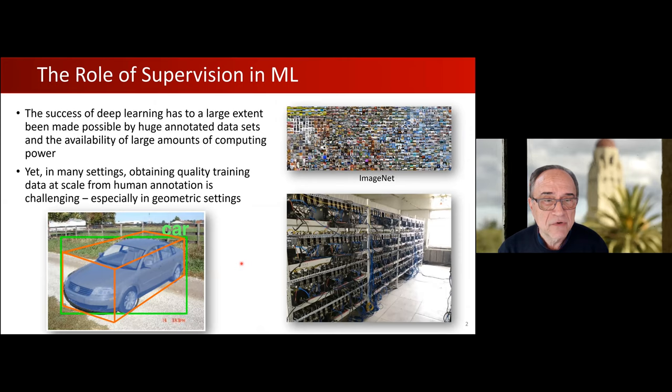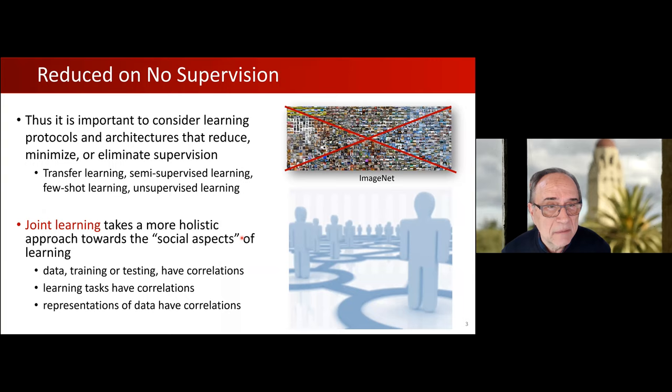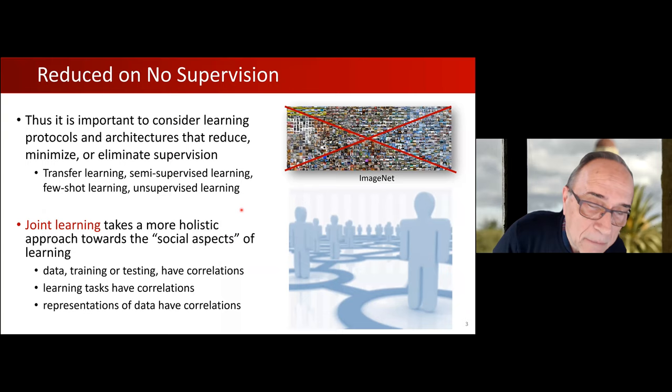There are many interesting settings in machine learning where obtaining quality training data at scale from human annotation is quite difficult. That's especially true in geometric settings — the areas that I work in. For example, if somebody shows you an image of a car and asks for the 2D bounding box, that's straightforward. But if you want to generate a 3D bounding box, that's much more demanding. Because of that, there has been a lot of focus in the community on protocols and architectures that could reduce supervision in various ways — transfer learning, semi-supervised learning, feature learning, unsupervised learning. And I'm going to introduce one more variation today, what I call joint learning.